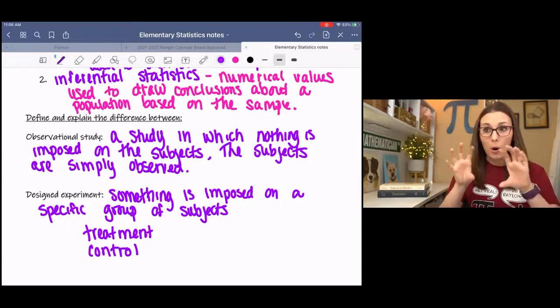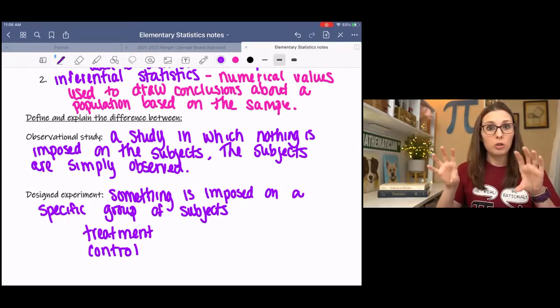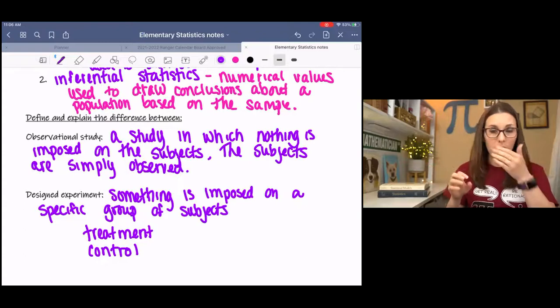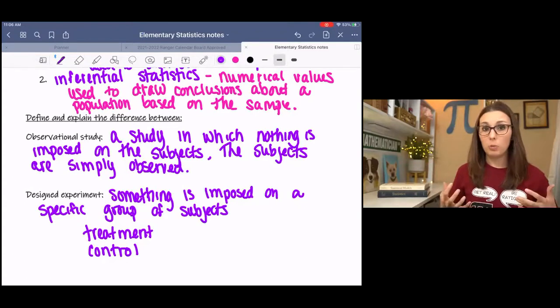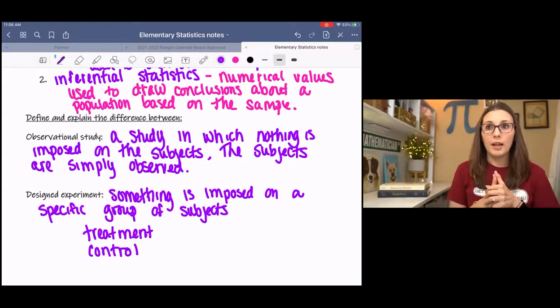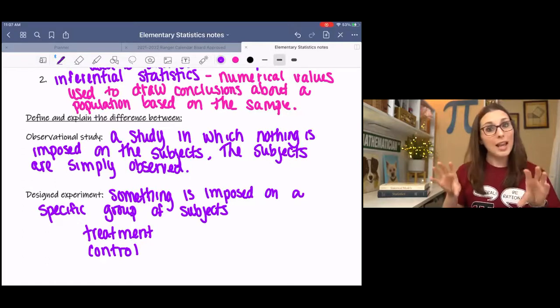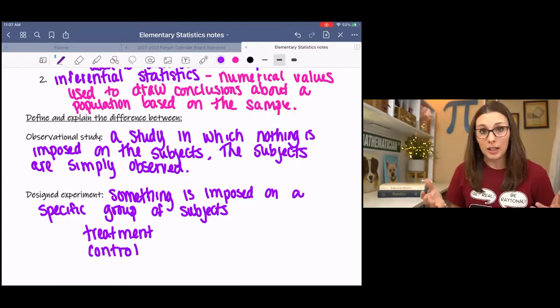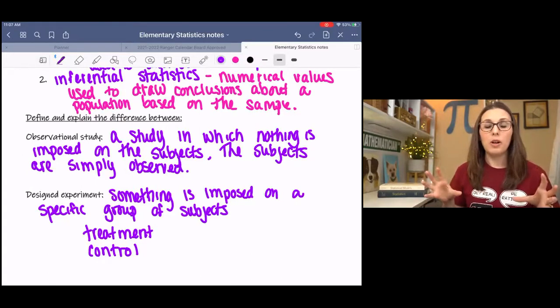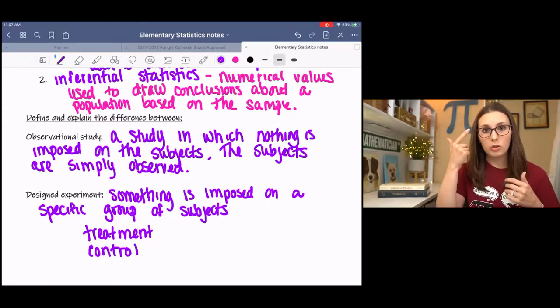But both groups don't know whether they got the treatment or not. So this is where the idea of a placebo pill comes in. So maybe it's a weight loss pill. And basically you have treatment and control and both groups get a pill. They may not know which pill they're getting, but they both get a pill. And then that way that eliminates the confounding variable of like psychological bias.